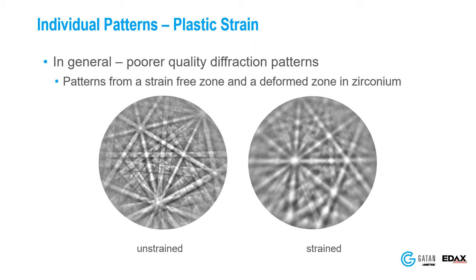Question: How did you get the elastic/mechanical properties of the different grains — is this a simulated result? Yes, that's a simulated result. From a single crystal we know the elastic constants and the orientation, so we take the model for Young's modulus and rotate it by the orientation of the crystal that we know.